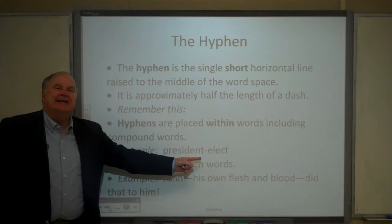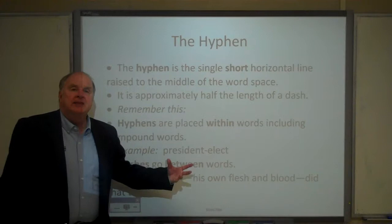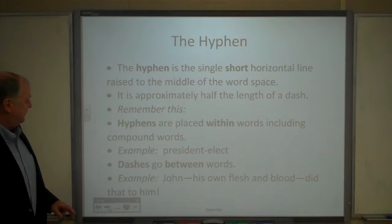So, for example, president-elect would have a hyphen, whereas dashes go between words. For instance, 'John — his own flesh and blood — did that to him.' That phrase 'his own flesh and blood' is set off by dashes, again going between words. So that's the basic rule of thumb.